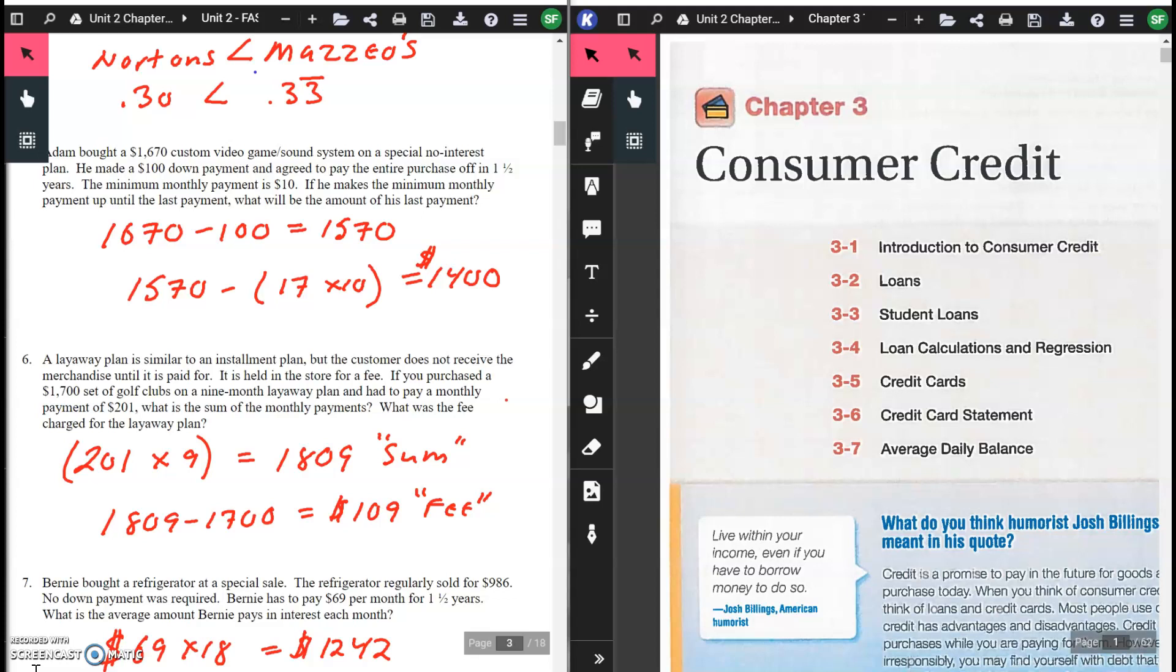$1,570 minus 17 times 10. The reason why it's 17 is because you're taking a year and a half. The reason why it's 17 and not 18 is because we're trying to figure out his last payment. His last payment would be the 18th payment, because 12 plus 6 is 18. We're only taking 17 because we need to figure out how much he owes on his last one. Put that into the calculator just as you see it. Because he's only paying the minimum of $10, it gives you $1,400.